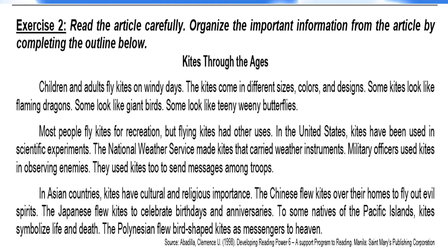Let's read another article carefully. Organize the important information from the article by completing the outline below. Are you ready? Now let's read. 'Kites Through the Ages.' Children and adults fly kites on windy days. The kites come in different sizes, colors, and designs. Some kites look like flaming dragons. Some look like giant birds. Some look like teeny-weeny butterflies.